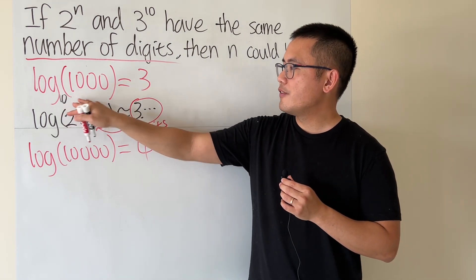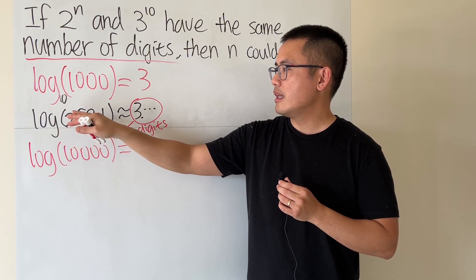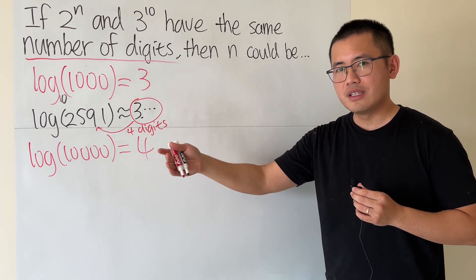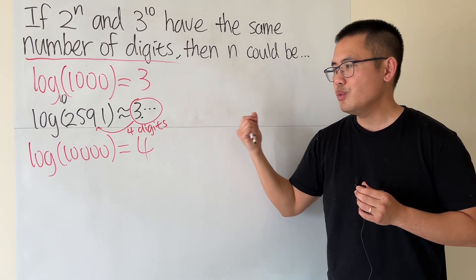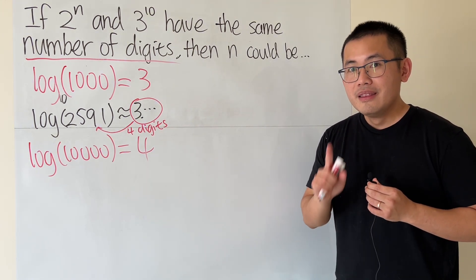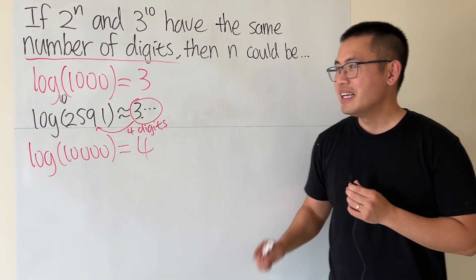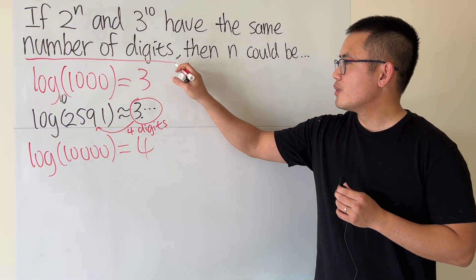Likewise, if you pick another 4 digit number, let's say log 5000, you end up with 3 point something as well. Log of 4 digit, let's say 9997, you will still end up with 3 point something. The moment you start with a 4, then you will have 5 digits here. So keep that in mind, this is what we are going to use.